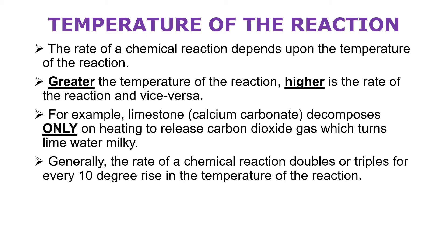Generally, the rate of a chemical reaction doubles or triples for every 10-degree rise in temperature. So every time you increase the temperature by 10 degrees, the reaction rate will either double or triple. For example, at 20°C a reaction takes 10 minutes to complete. At 30°C, when the temperature increases by 10 degrees, the rate doubles — meaning the time will become half. So the same reaction will now be completed in just 5 minutes.